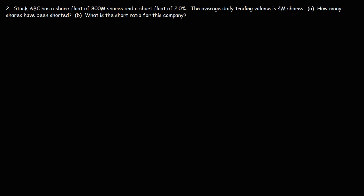Now let's work on another problem. Stock ABC has a share float of 800 million shares and a short float of 2%. The average daily trading volume is 4 million shares. Part A: how many shares have been shorted? We know the short float as a percentage, so we're going to use the short float formula.